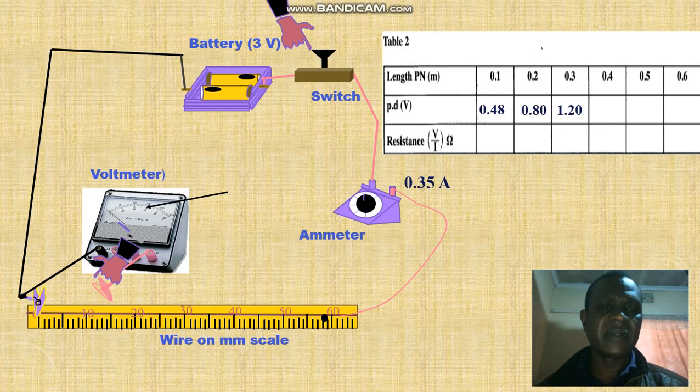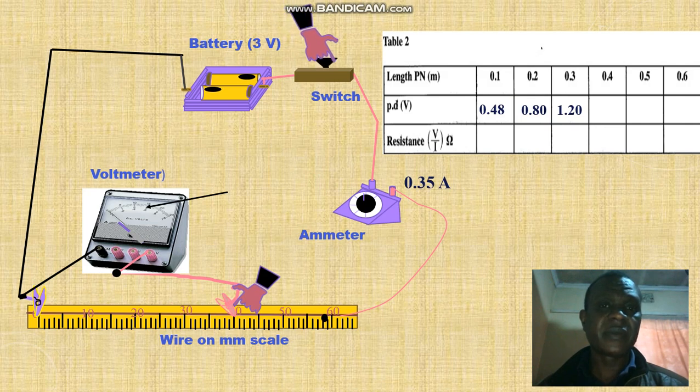We repeat again at 40 centimeters. Then switch on to get the voltmeter reading and record.